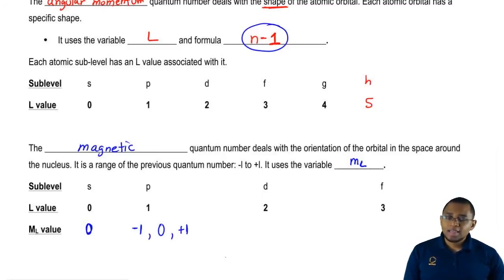If L is two, then m sub L is negative two to positive two and all the whole numbers in between. So the range would be negative two, negative one, zero, plus one, plus two.